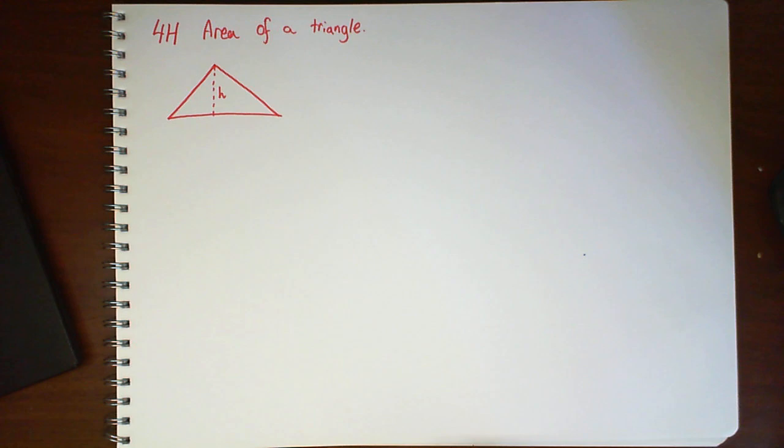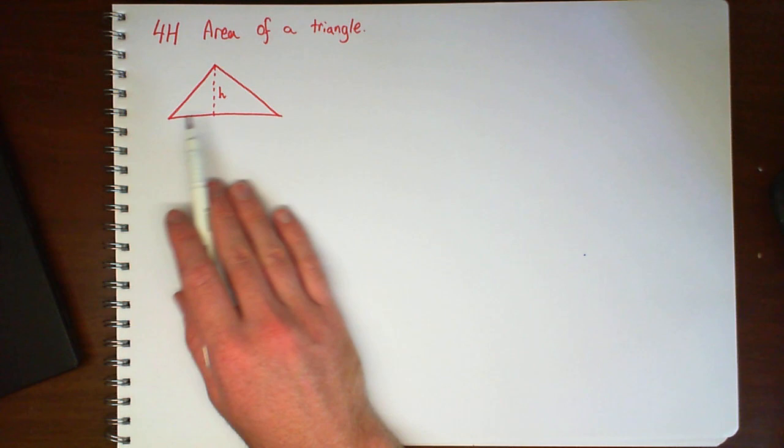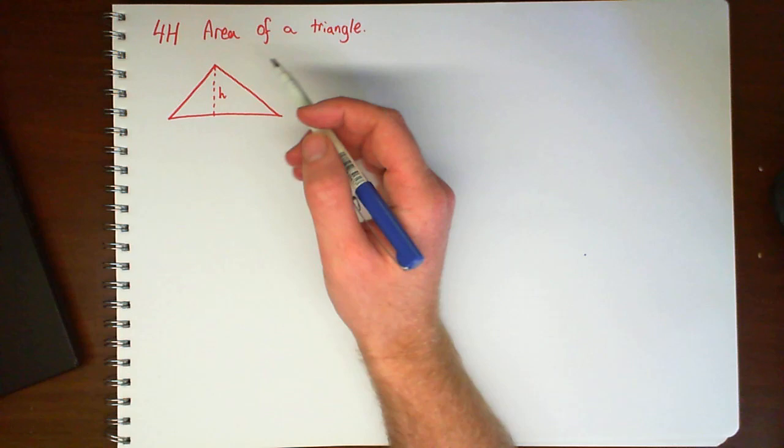In this video we're going to have a look at areas of triangles. Here we have a non-right angle triangle with a height of h. And what we're going to do is be able to work out a general rule for finding the area of a triangle.